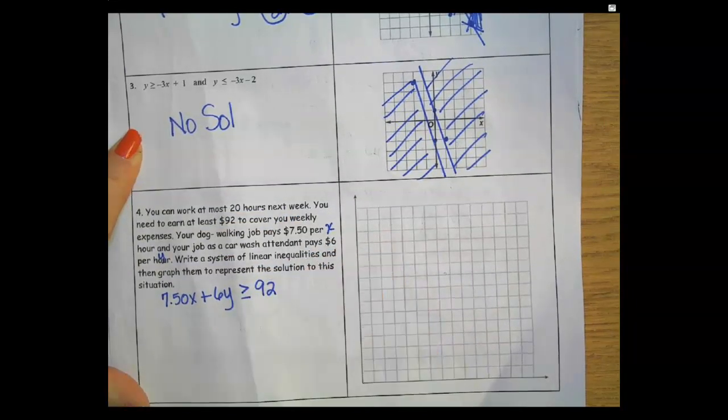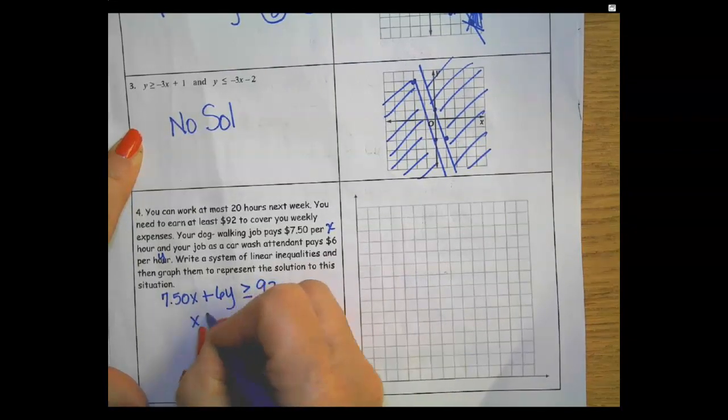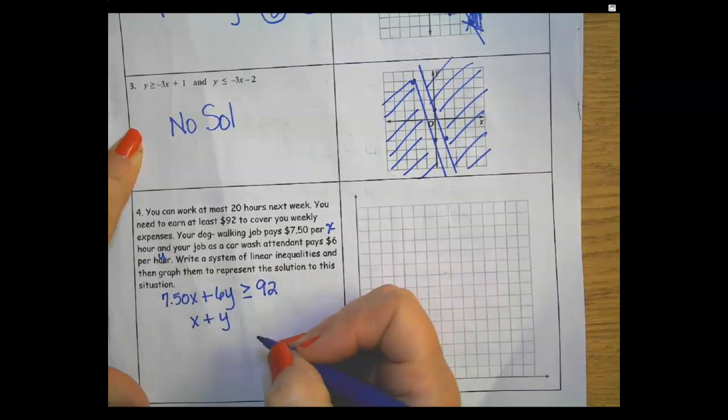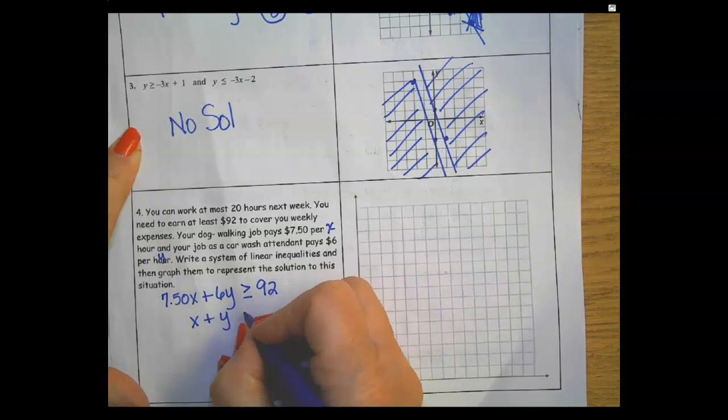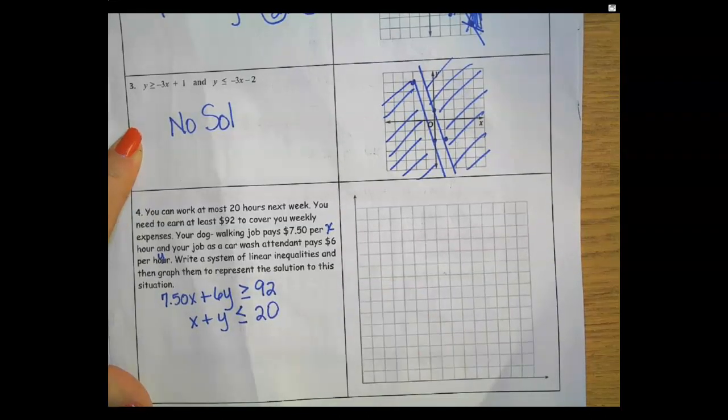At the beginning it says both of these hours together, so the hours alone x plus y needs to be at most, so that's less than or equal to 20. So those are the two equations.